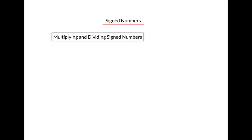Let's now look at multiplying and dividing sign numbers. The rule is: if two numbers you're multiplying or dividing have the same sign — positive and positive, or negative and negative — the answer will be positive. And if the two numbers have opposite signs — positive and negative, or negative and positive — then the answer will be negative.